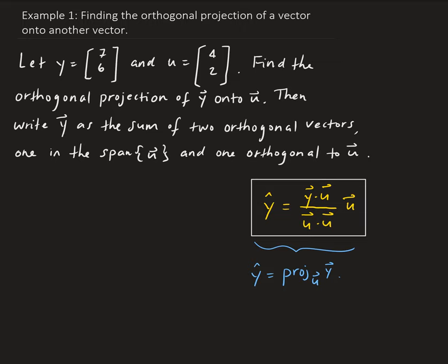In this example, we want to find the orthogonal projection of y onto the vector u. We're given that y is equal to the vector [7, 6], and we want to project that onto the vector u, which is [4, 2]. Down here in the box, this formula was derived in another video, so now we're going to apply it to this particular problem.